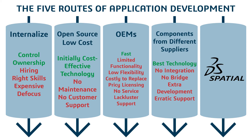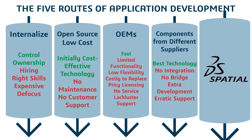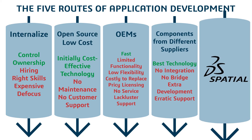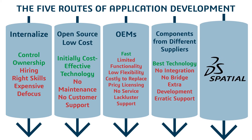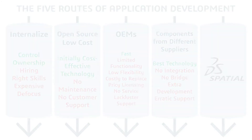No one route is better than the other for an application, as it depends on the team's and configuration's goals. However, the application lifecycle management framework is an additional route that takes each route's best features and mitigates the cons. A robust component provider addresses the complete workflow from ideation to end of life by providing expertise through all phases and all necessary technologies to build an application from scratch.